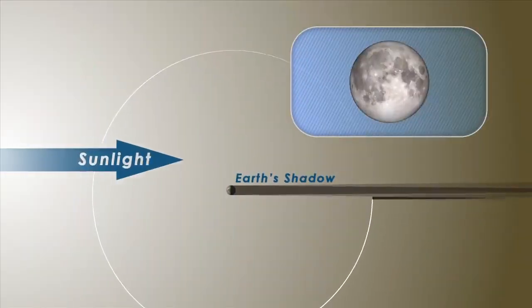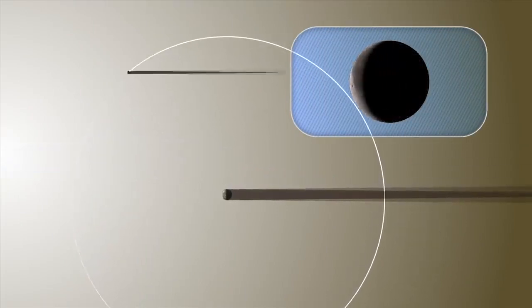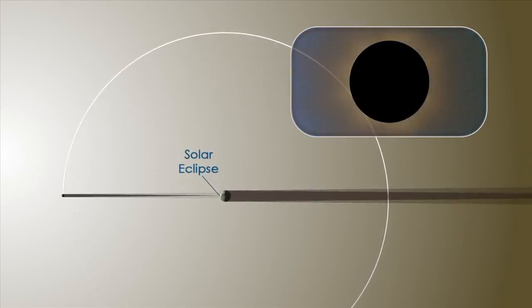A lunar eclipse occurs when the moon passes through the Earth's shadow, just as a solar eclipse occurs when part of the Earth passes through the moon's shadow.